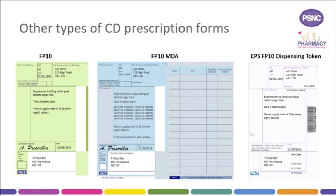In England, CDs can also be prescribed on the green FP10 forms for single supplies. There is no provision within the NHS regulations to dispense CDs in instalments on a standard FP10 prescription form. To prescribe in instalments, the appropriate blue instalment dispensing form FP10MDA should be used for this purpose. Different instalment dispensing forms are available in other home countries. For private prescribing of Schedule 2 and 3 CDs, standardised prescription forms must be used, and Leila will go through these in more detail later.